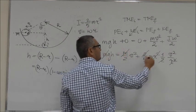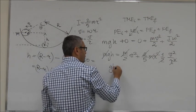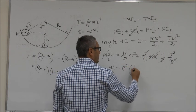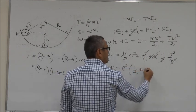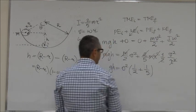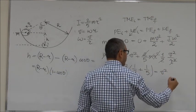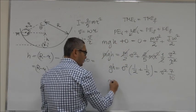So you have gh equals v squared times 1 over 2 plus 1 over 5, which is v squared times 7 over 10. So v is equal to the square root of 10 over 7 gh.